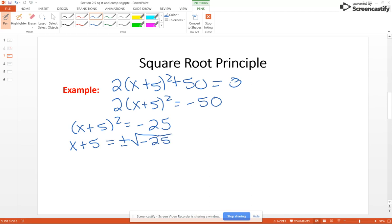Now we're allowed to use complex numbers in this section, so we will continue. x plus 5 is equal to plus or minus the square root of negative 25. It's 5i. And so we finally get x equals – subtract the 5 from both sides – negative 5 plus or minus 5i. Now don't forget, that means x equals negative 5 minus 5i and x equals negative 5 plus 5i. Please note, those are complex conjugates. That happens quite a bit.